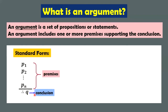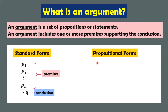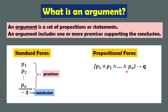So this is the standard form of an argument. The triple dot symbol here means 'therefore.' We have another form of an argument — the propositional form. We can state it in one statement. To convert a standard form to its propositional form, all you have to do is connect or combine the premises using the connector 'and.' They become the hypothesis. And this is the conclusion: If P1 and P2 and up to Pn, then Q. That's what an argument looks like — it's made up of premises that support the conclusion.